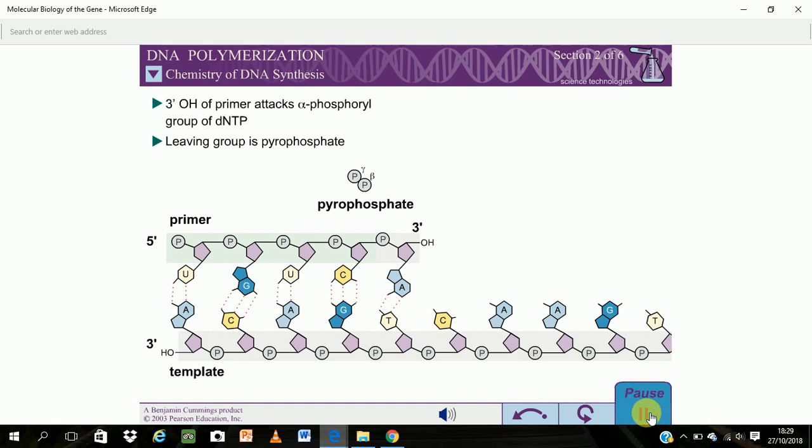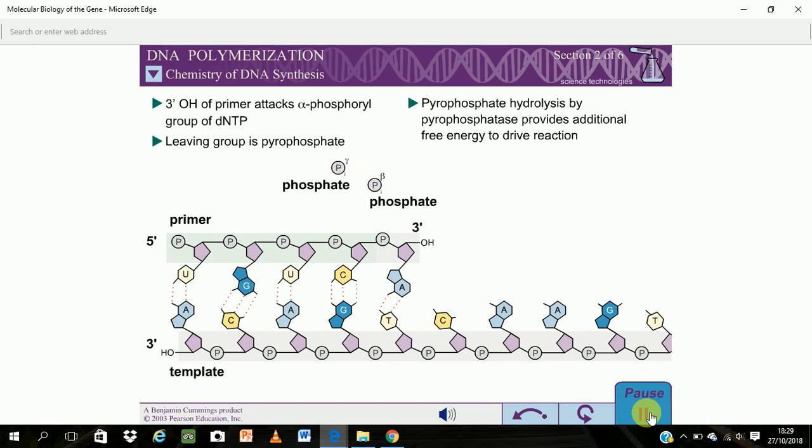The free energy change for this reaction is rather small. However, additional free energy is provided by the rapid hydrolysis of the pyrophosphate into two phosphate groups. This reaction is catalyzed by the enzyme pyrophosphatase.